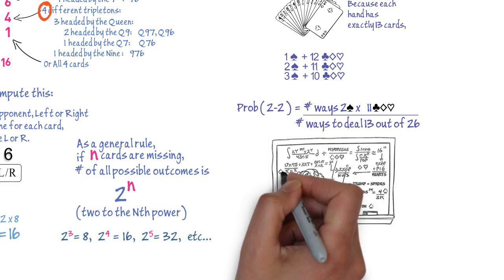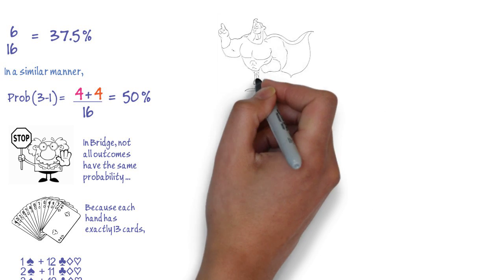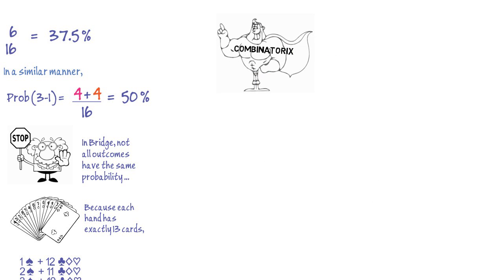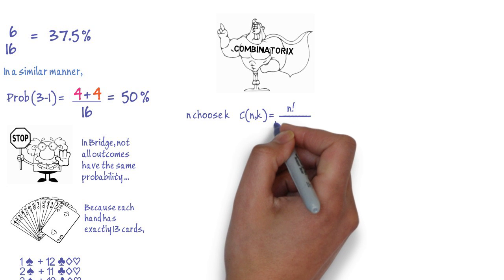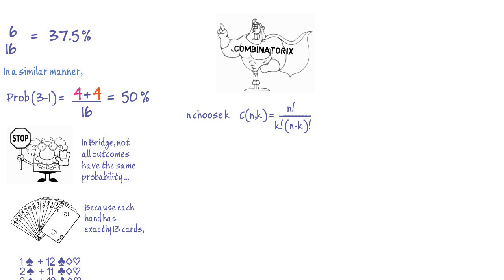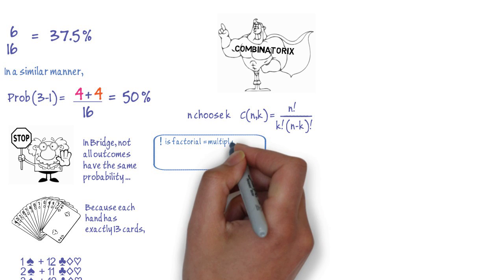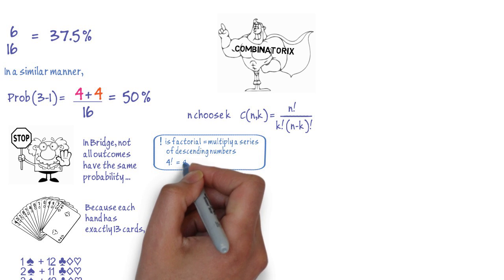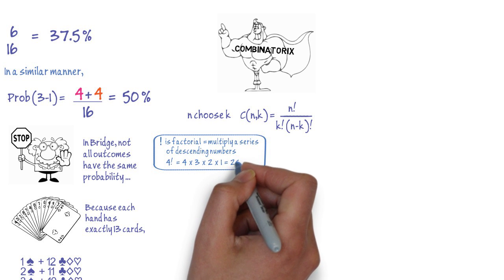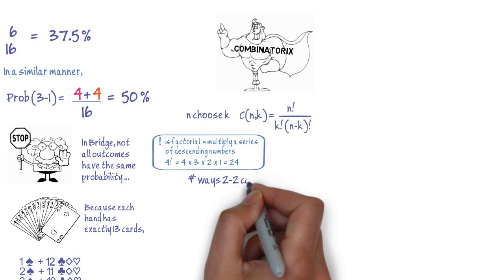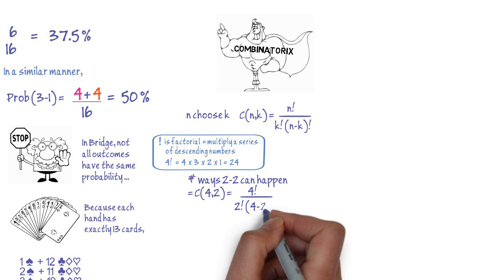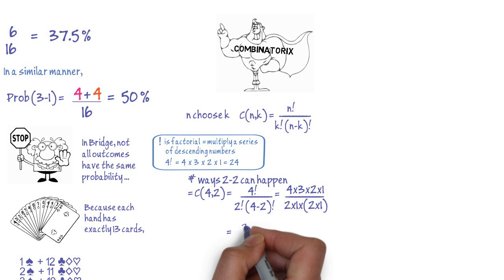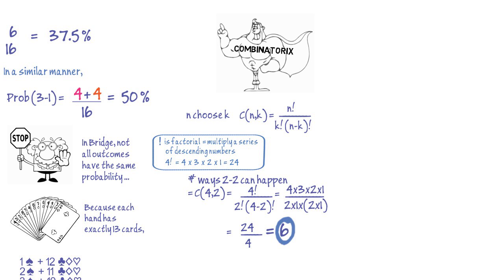It would be extremely laborious to enumerate and count all favorable and possible outcomes. Fortunately, math comes to the rescue, telling us that the number of possible ways to select k items out of n — called combinations of n by k, or n choose k — is given by the formula: n choose k equals n factorial divided by k factorial times (n minus k) factorial. Factorial means multiplying a series of descending numbers: 4 factorial equals 4 times 3 times 2 times 1, which equals 24. Going back to our first example, the number of ways 2-2 can happen is 4 choose 2, which equals 4 factorial divided by 2 factorial times (4 minus 2) factorial — we get 24 divided by 4, which is 6. This is the same as our previous result.